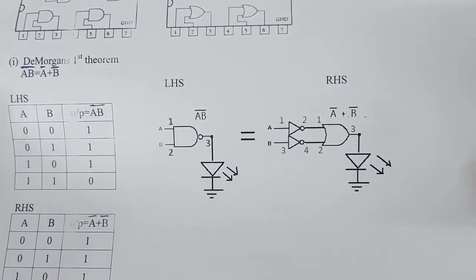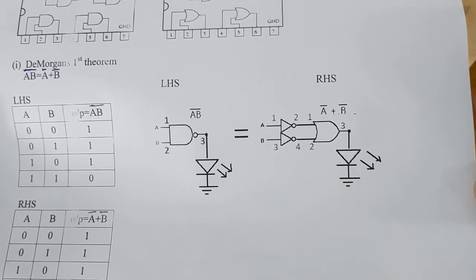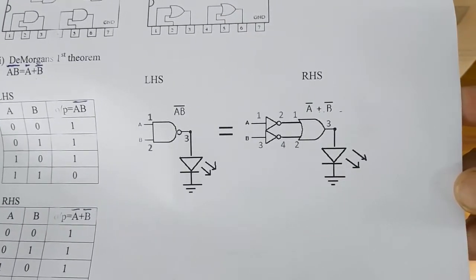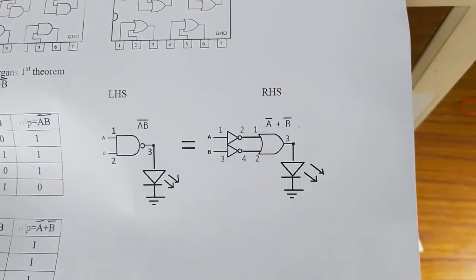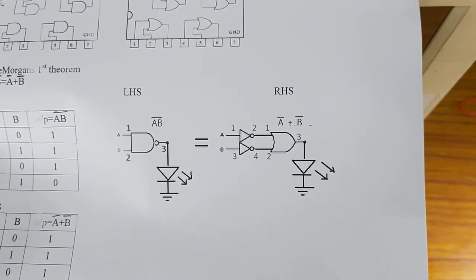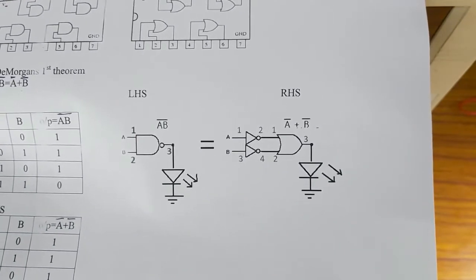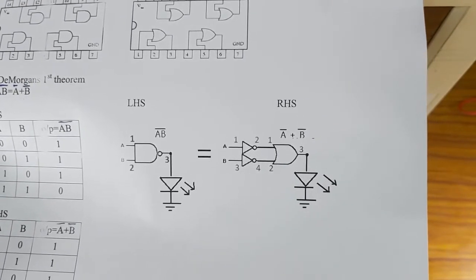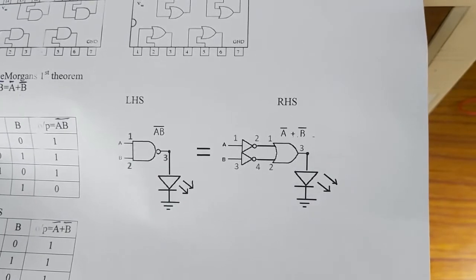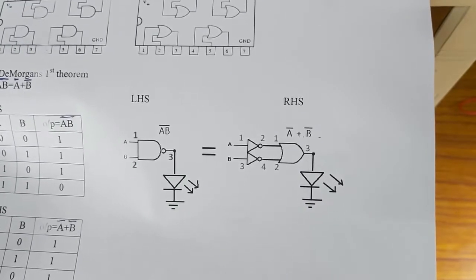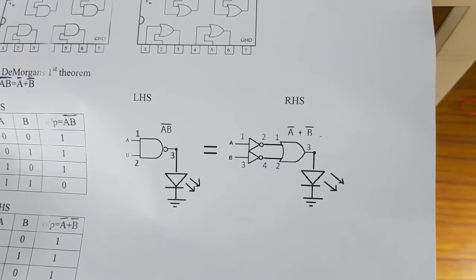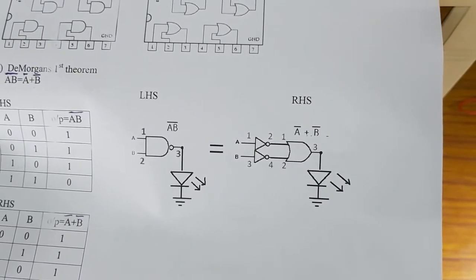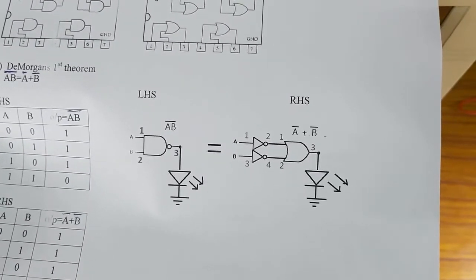The circuit diagram for the left hand side uses a NAND gate. Pin number 1 and 2 are the inputs, and pin number 3 is the output which goes to the LED. For the right hand side, we have a NOT gate followed by an OR gate. Pins 1 and 3 are the inputs for the NOT gate, and pins 2 and 4 are the outputs. The NOT gate output on pin 2 goes to the OR gate input, and pin 4 of the NOT gate goes to pin 2 of the OR gate. Pin 3 is the output.